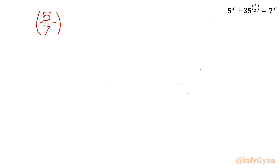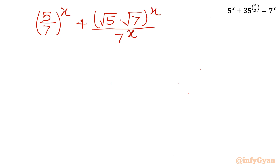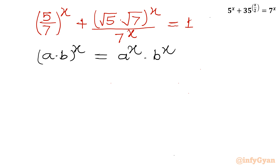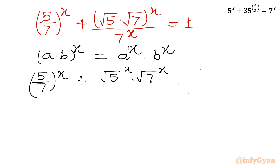I will be writing (5/7)^x. Then it was √35, which I will write as √5 · √7, and the power will be x, divided by 7^x. Right-hand side is 1. Now applying the law (a·b)^x = a^x · b^x, I write (5/7)^x + (√5)^x · (√7)^x / 7^x.